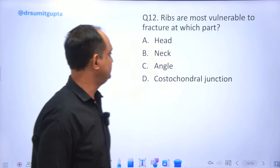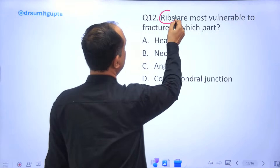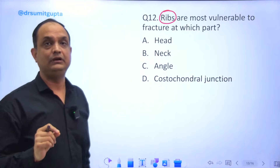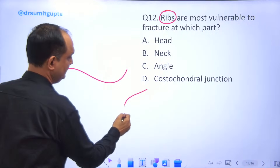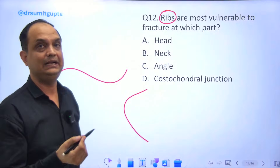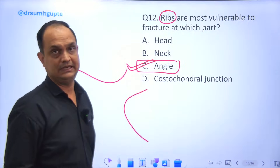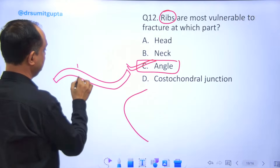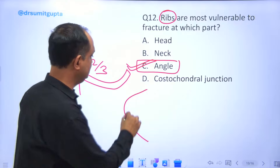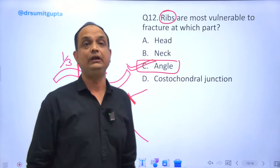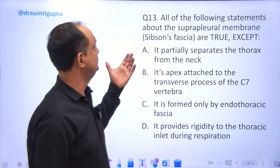Ribs are most vulnerable to fracture at which point? Bones with curvature, like the clavicle and ribs, are always at higher risk of fracture at their angle. The angle portion of the rib is the most common site. Similarly, the clavicle fractures at the junction of its one-third and two-third curvature. In the same way, the angle of the rib is the most vulnerable point with the highest chance of fracture.